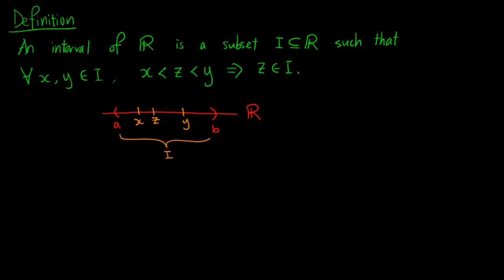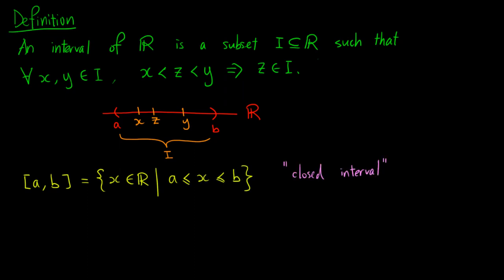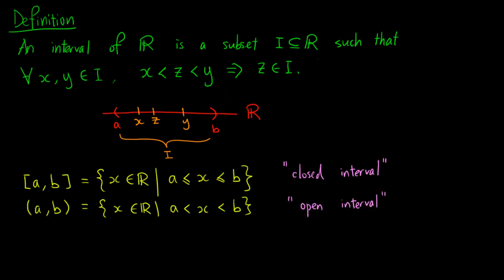Every interval of the real numbers has two endpoints, say a and b, and takes one of the following forms. The first one is known as a closed interval, where the interval is the set of real numbers x such that x is between a and b, including both of its endpoints. We use square brackets a comma b to denote this interval. The second type is called an open interval, in which both of its endpoints are excluded. An open interval is denoted by round brackets a comma b.